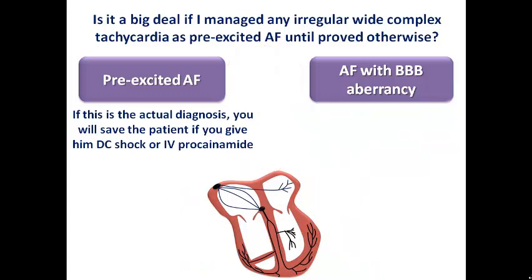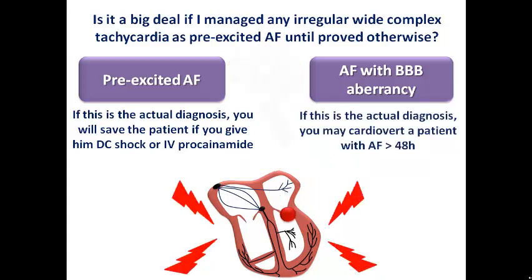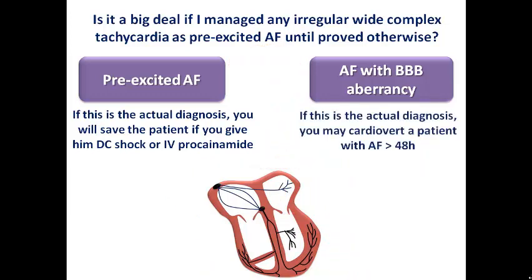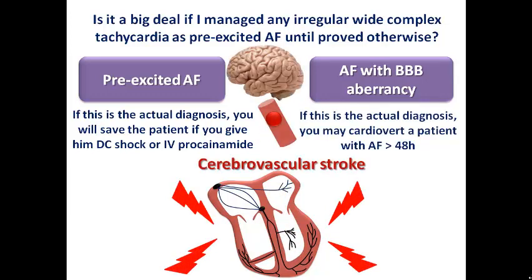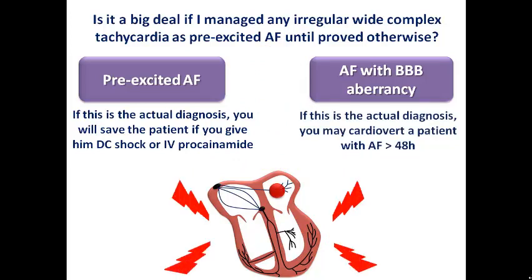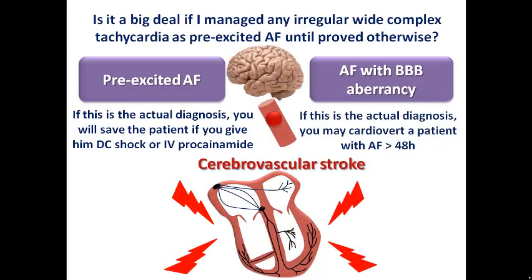Giving DC shock to a patient with AF of more than 48 hours can mobilize the thrombus from the left atrium into the brain, for example, which is a vital organ, and the patient may develop cerebrovascular stroke. So if you misdiagnose AF with aberrancy as pre-excited AF and give DC shock, the patient would suffer serious harm. Please pay close attention to differentiating pre-excited AF from AF with aberrancy.